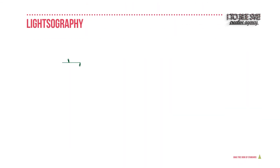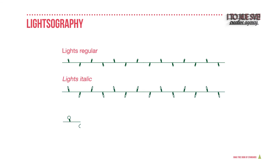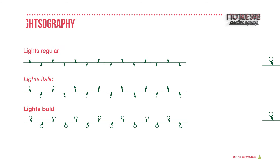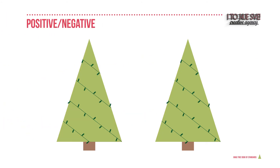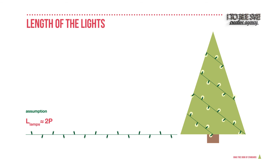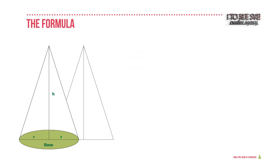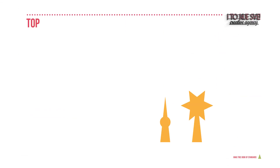Lightsography is the way to make the Christmas tree speak of its character. It comes in regular, italic, and bold. Just look at those primary and secondary colors. Positive and negative is here to wrap in lamps the whole Christmas tree — and nothing less than a whole Christmas tree. Using this formula will be appreciated.